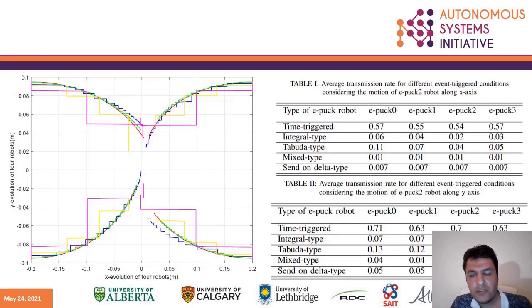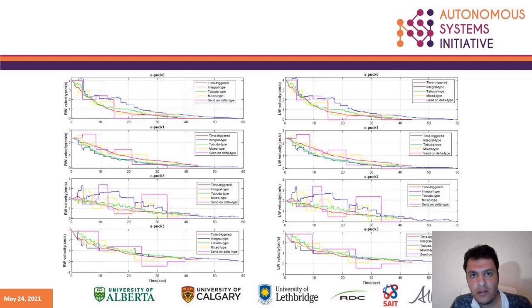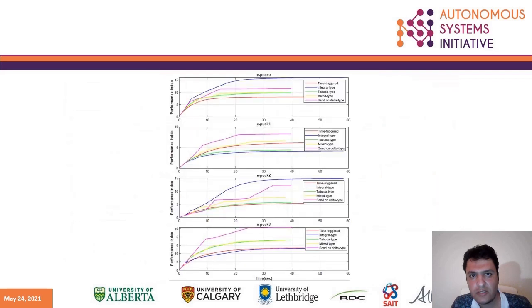This graph shows the position of robots in two dimensions considering five triggering conditions. A table shows the average transmission rate of robots considering different triggering conditions. Here is the graph related to left wheel and right wheel velocities considering different triggering conditions.